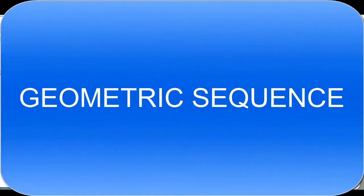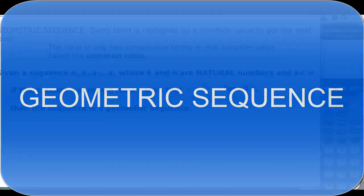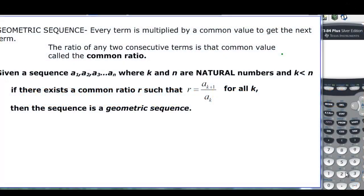This video will talk about geometric sequences. A sequence is a pattern of terms. With arithmetic sequences we were adding the same value over and over again. With geometric sequences, we multiply by a common value to get each successive term, and the ratio of any two consecutive terms is called the common ratio.